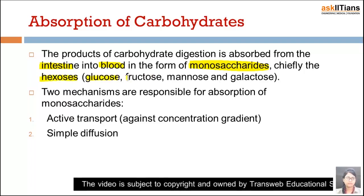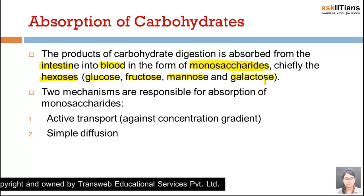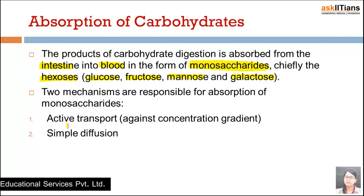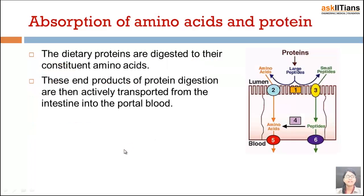For example, glucose, fructose, mannose, and galactose. Two mechanisms are responsible for this absorption of monosaccharides: one is active transport and the second is simple diffusion. Active transport occurs against the concentration gradient, which is why it is known as active transport.